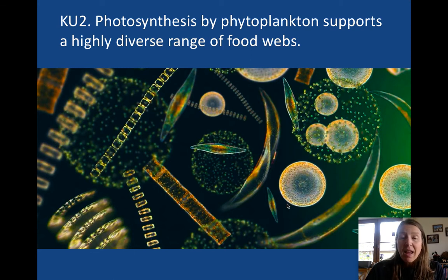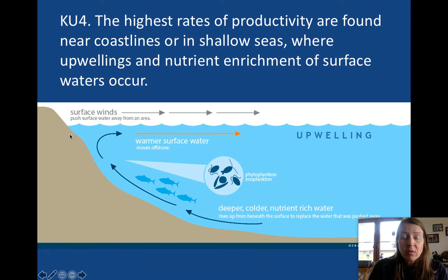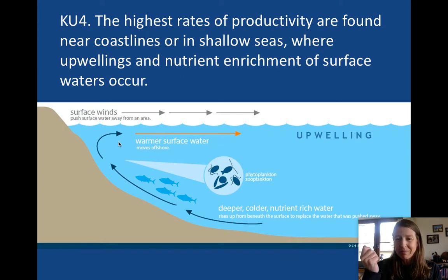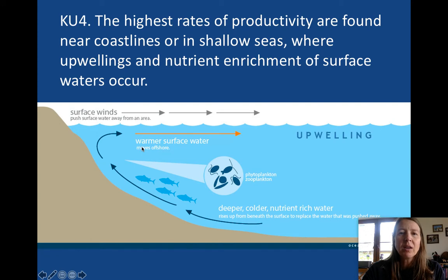We find the highest rates of productivity near coastlines. One reason is they tend to be shallower due to the continental shelf — shallower water means more sunlight reaches the organisms. The deeper the ocean, the less sun, so primary productivity drops. We also tend to get upwellings near coastal areas that bring in nutrient enrichment.